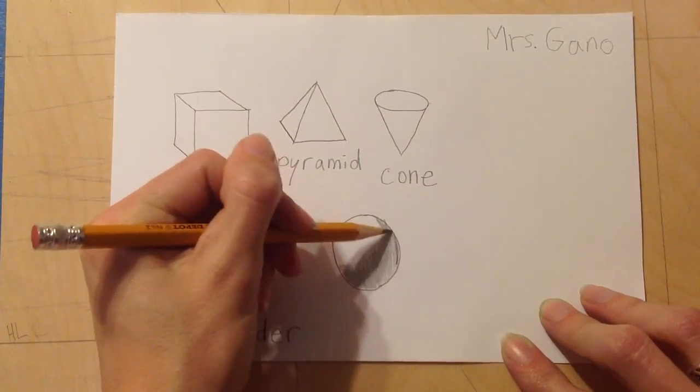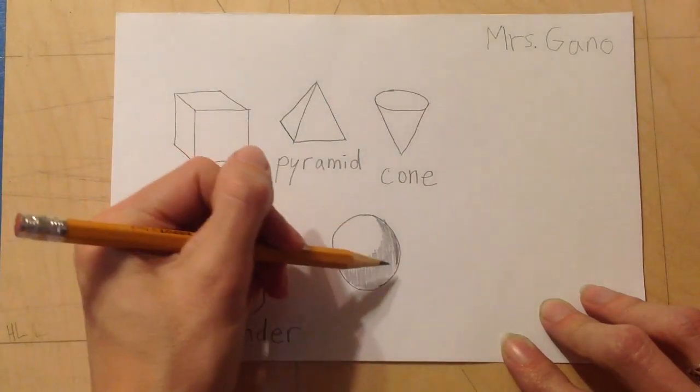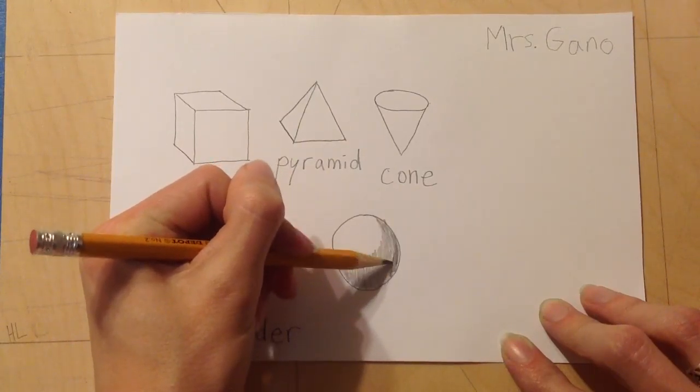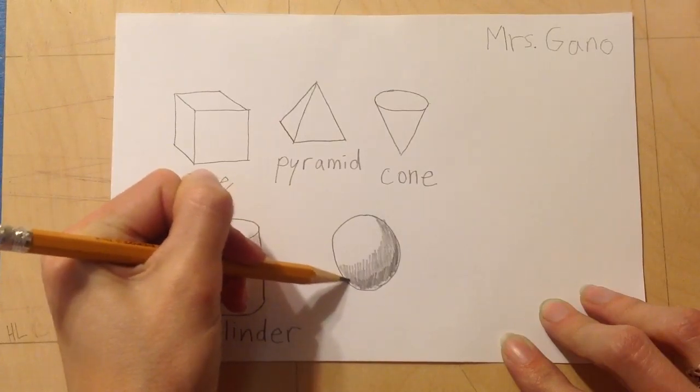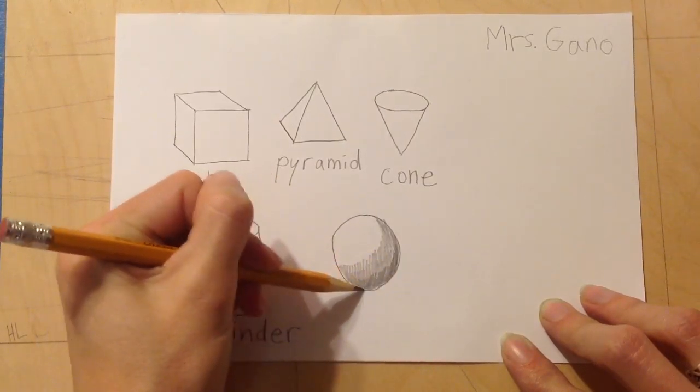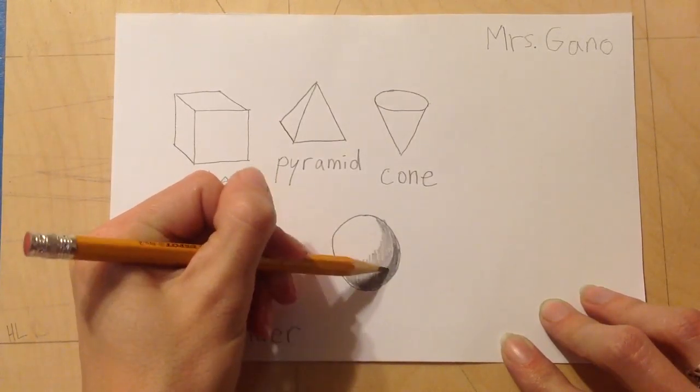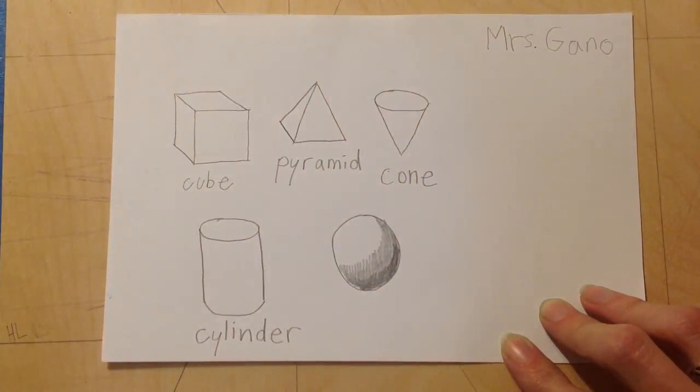And if you feel very confident about your shading skills, you can make it a little bit darker on the side that's darkest. And then it really starts to pop out at you.